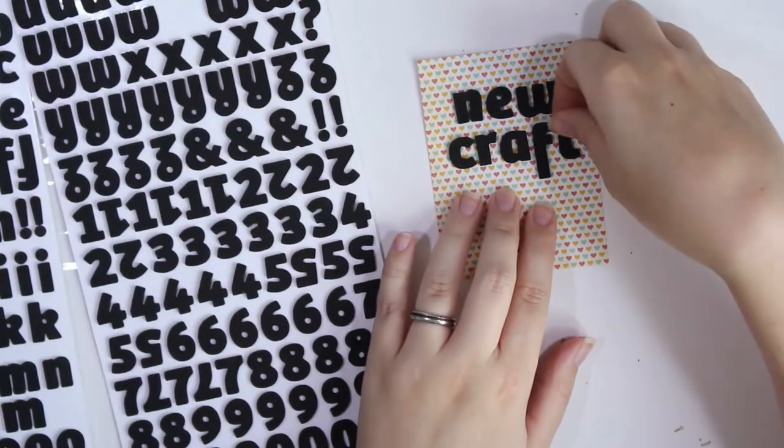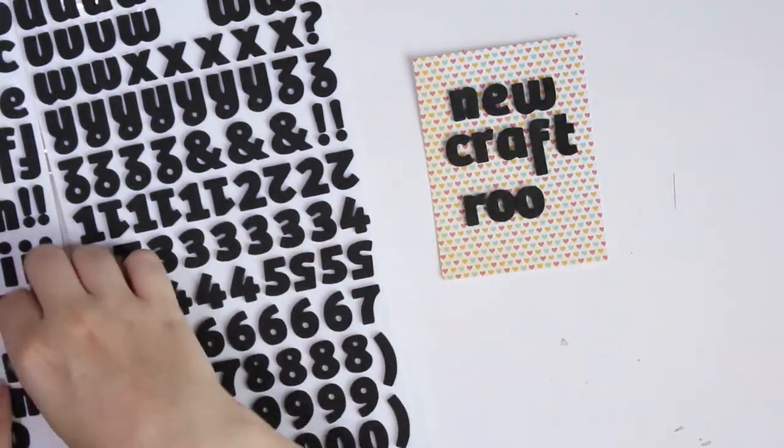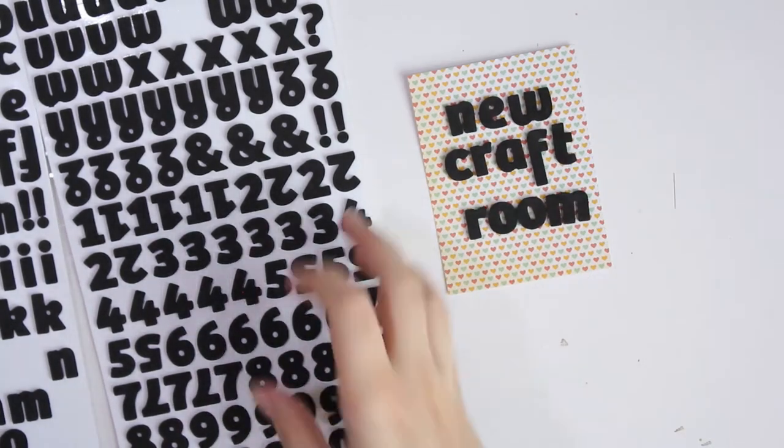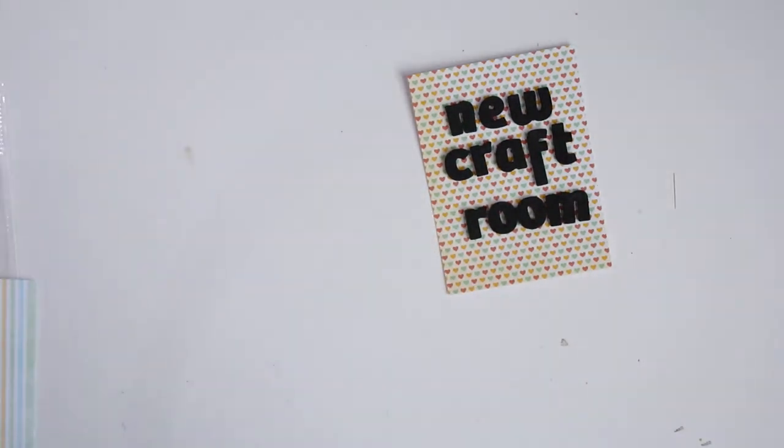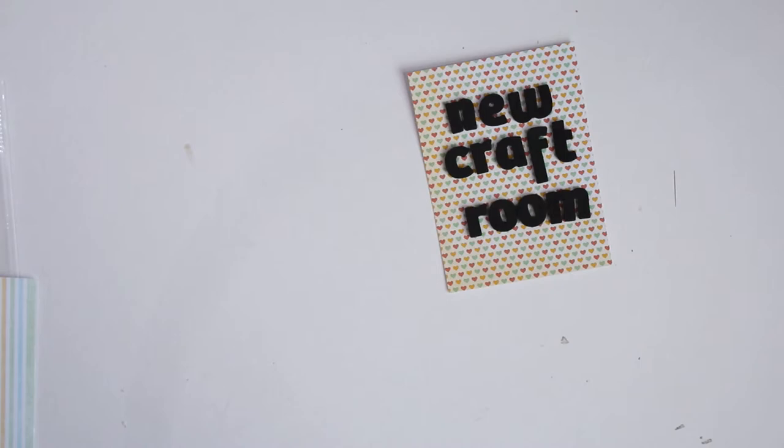I'm spelling out 'new craft room' with these lovely foam stickers. I do fuss about making sure that they're even and in the middle. Eventually I end up basically coming to terms that I'm never going to get it completely straight.